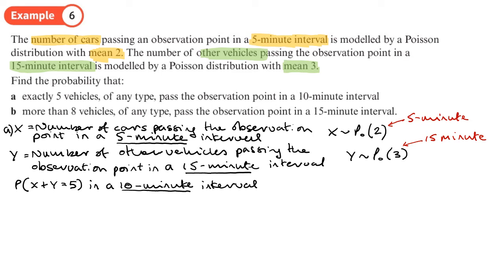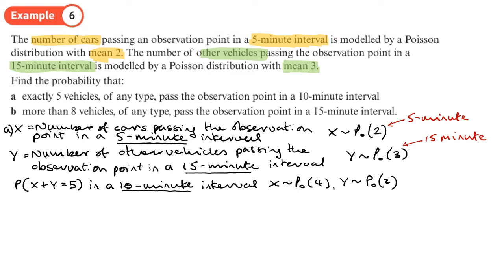In a 10-minute interval, the rate for cars is 4 (scaling up from 2 per 5 minutes), and for other vehicles it's 2 (scaling down from 3 per 15 minutes to 2 per 10 minutes). So X + Y follows a Poisson distribution with rate 4 + 2 = 6. We want to find the probability that X or Y is exactly 5.